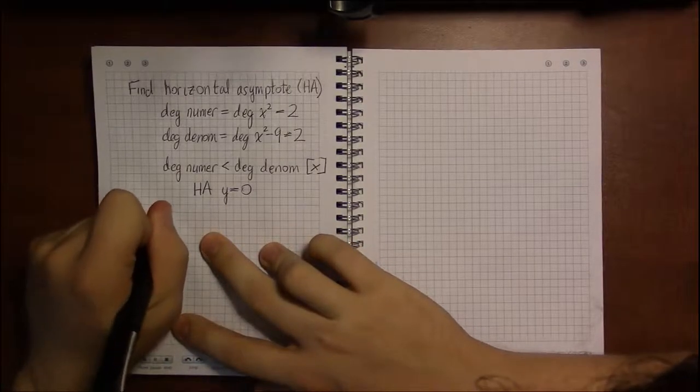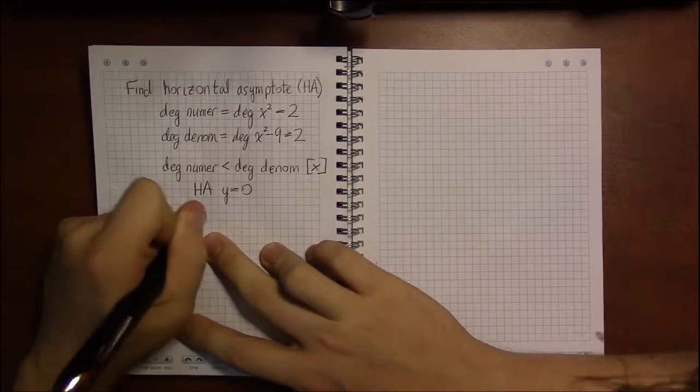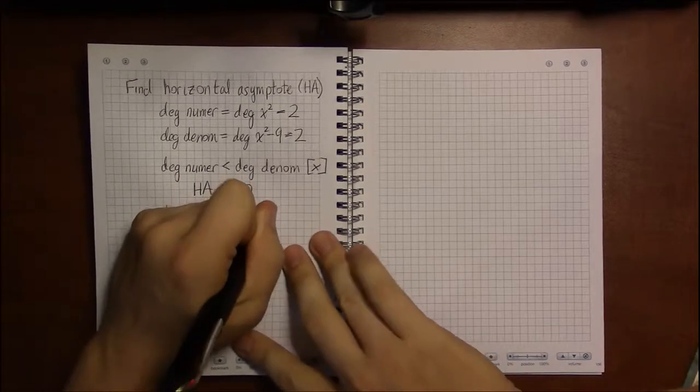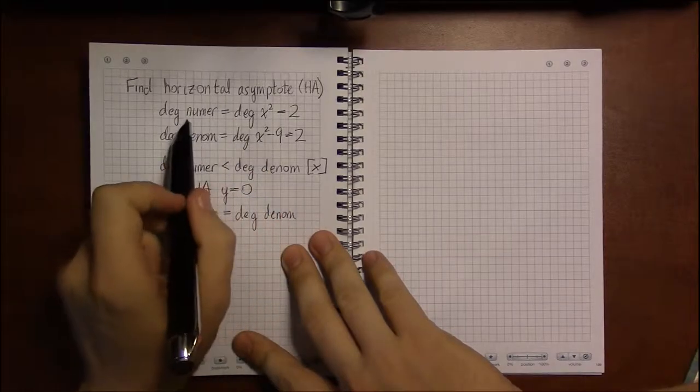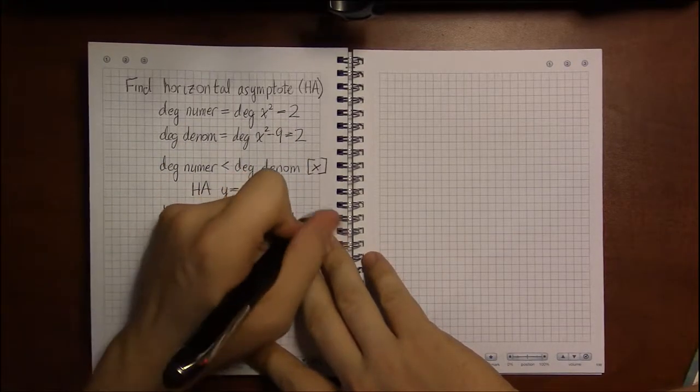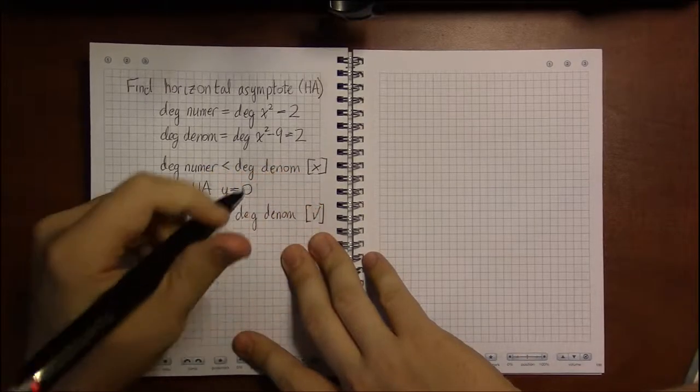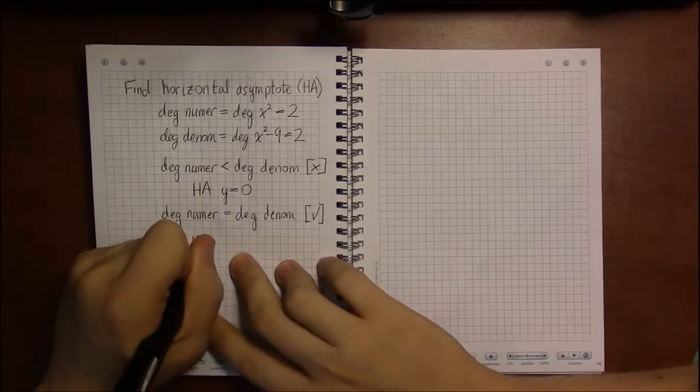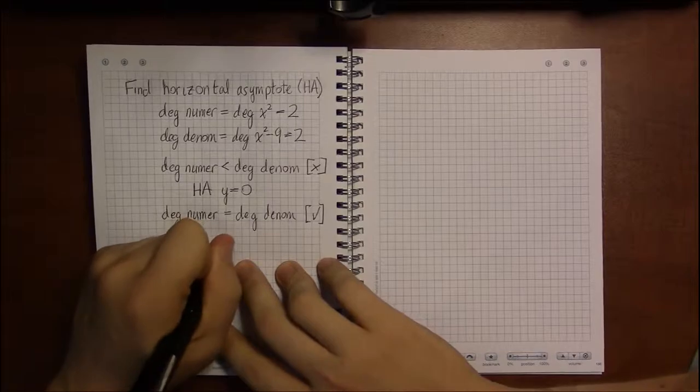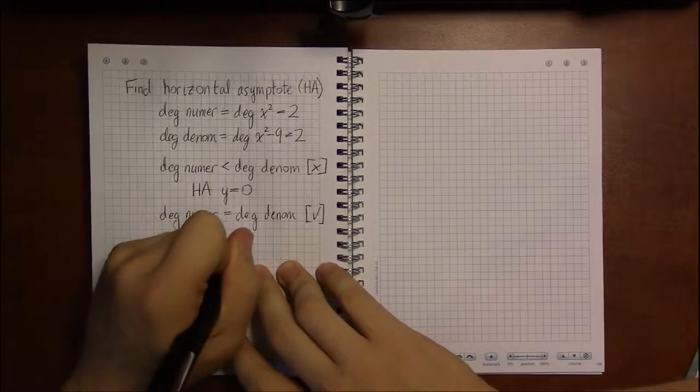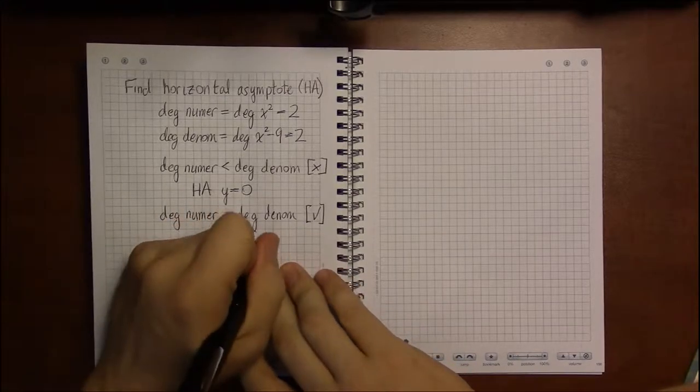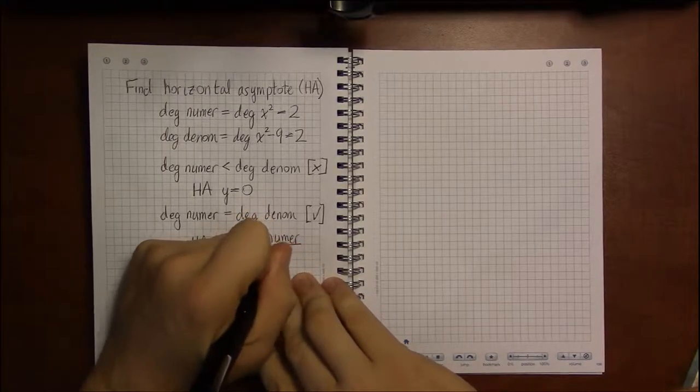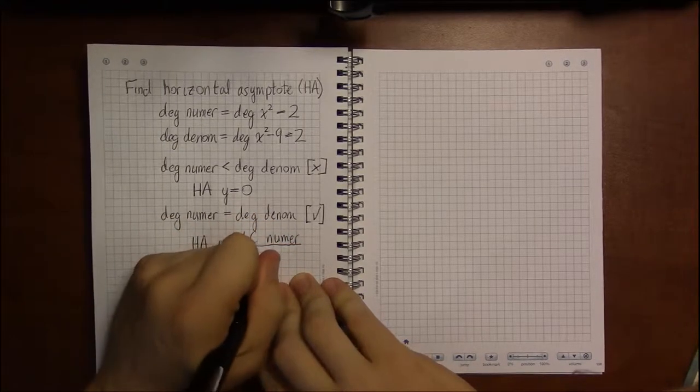If the degree of the numerator is equal to the degree of the denominator, which is the case that we're in. The degree of the top and the degree of the bottom are the same. This is for us. Then the horizontal asymptote is going to be the only horizontal asymptote is going to be the ratio of the leading coefficients. In other words, the leading coefficient of the numerator on top divided by the leading coefficient of the denominator.